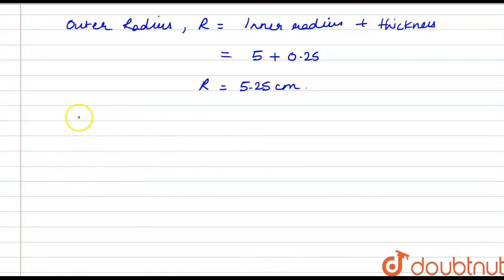Now we have to find the outer curved surface area. And we know that the curved surface area of a hemisphere is 2πr².